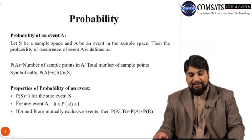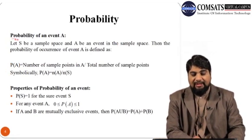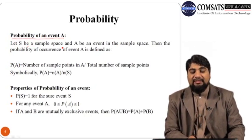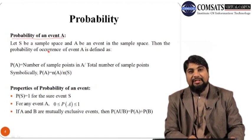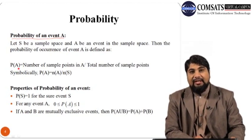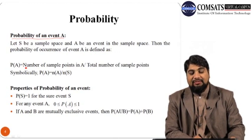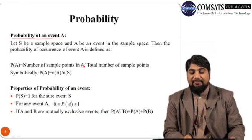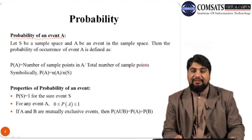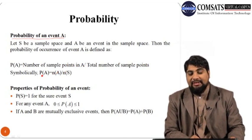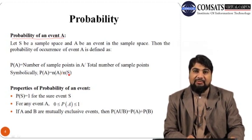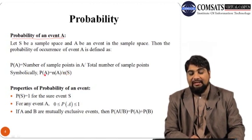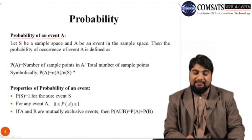Let us first define the probability of an event A. Let S be a sample space and A be an event in the sample space S. Then the probability of occurrence of event A, denoted by P(A), is equal to the number of sample points in A divided by the total number of sample points. Symbolically, P(A) = n(A) / n(S).